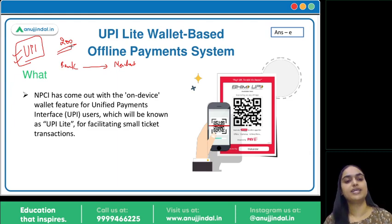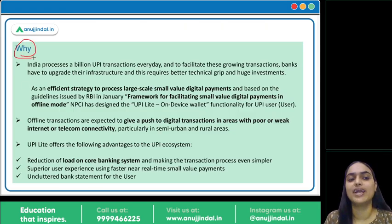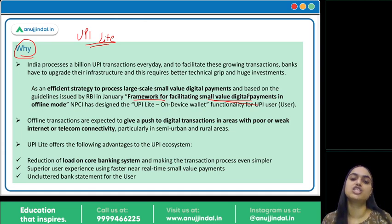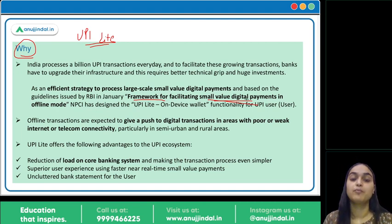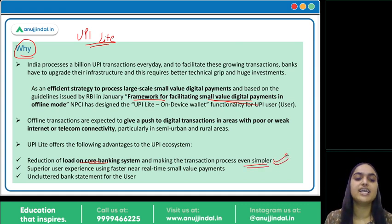UPI Lite is an on-device wallet feature for UPI users and it facilitates small ticket transactions. As I discussed, in January RBI came up with the framework to facilitate small value digital payments, clarifying that no additional factor authentication is needed for transactions up to 200 rupees, which can happen in offline mode. In order to further that objective, UPI Lite has been introduced. Most transactions happening were small value transactions, so this reduces the workload on the server and the core banking system, making these transactions faster and simpler.